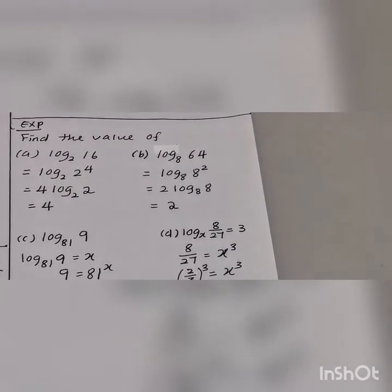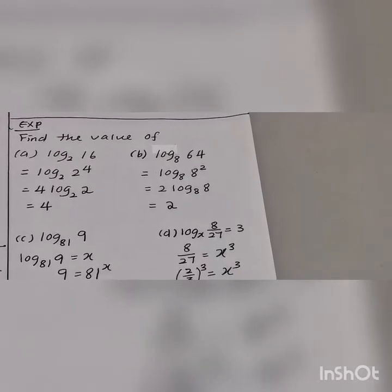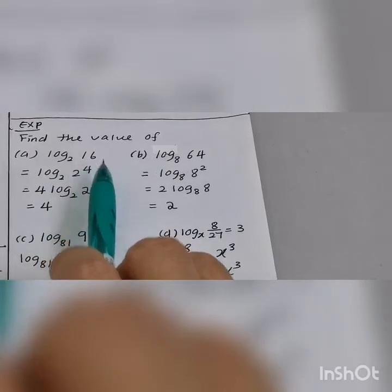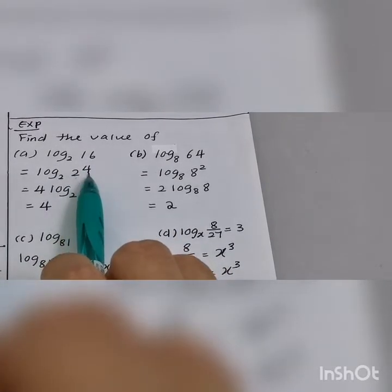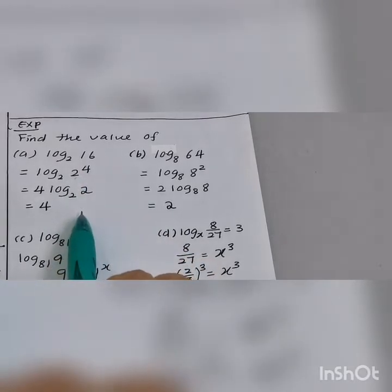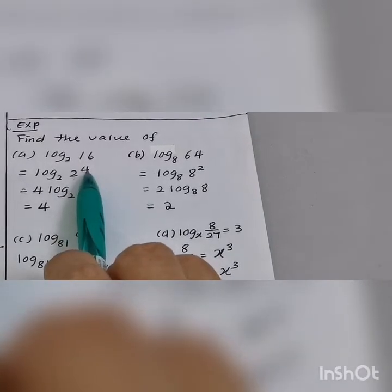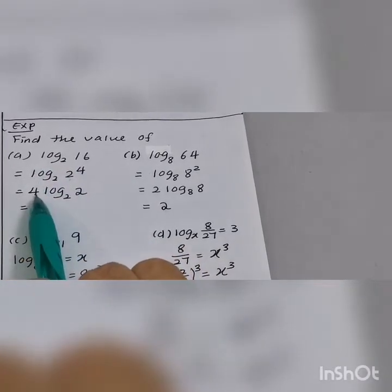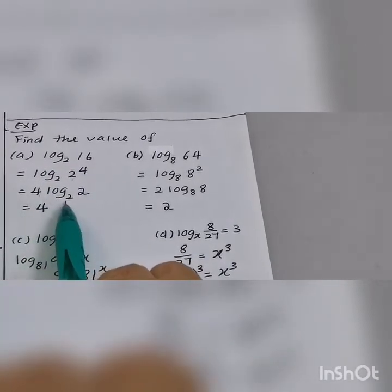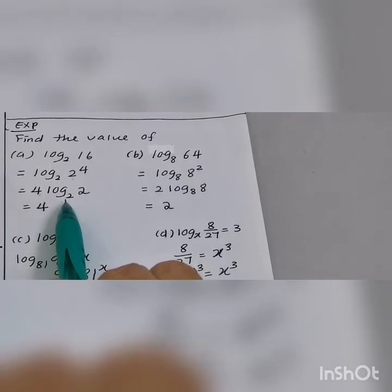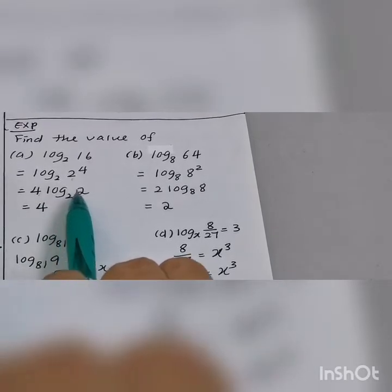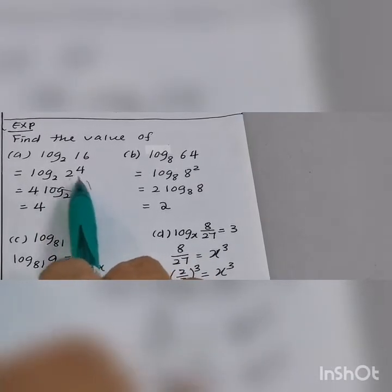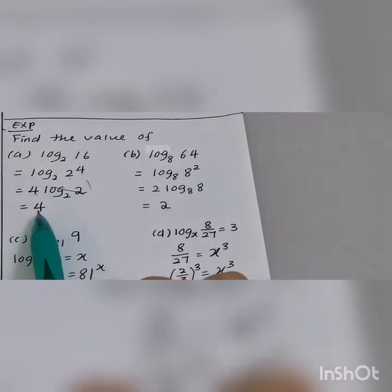Next one: find the value of log base 2 of 16. 2 to the power 4 is 16. Then the 4 moves to in front. As per the law of logarithms, when the base and the number inside are equal, you cut them — they become 1. So 1 times 4 equals 4.